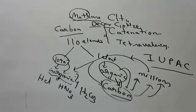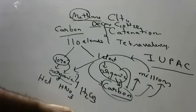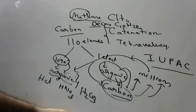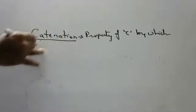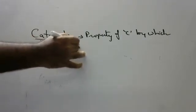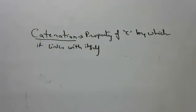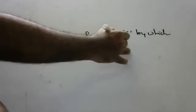If you concentrate, organic chemistry will be very easy. There are rules and regulations, and if you know those rules you can recall any compound in any reaction. This topic continues into first year and second year of intermediate. Now — what is catenation? It is a property of carbon by which it links with itself to form long chain carbon compounds.